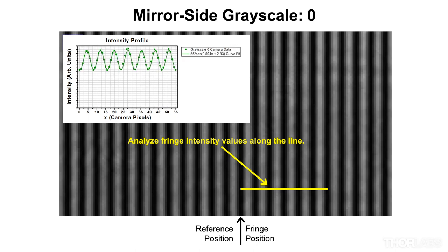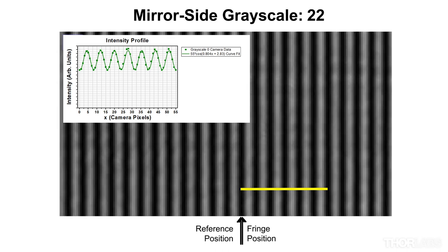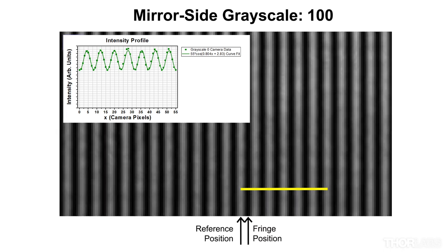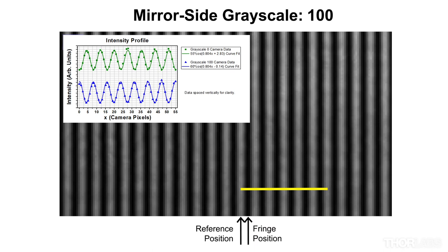First, I fit a cosine function to the intensity values along the line profile. This fit for grayscale value 0 provides a baseline reference curve. Next, I curve fit intensity values from the same line profile on the images taken for each grayscale value applied to the mirror side. For example, a grayscale value of 100. The difference between the phase of this curve and the reference curve is 2.97 radians. This means a grayscale value of 100 will provide a phase delay of 2.97 radians relative to a grayscale value of 0.